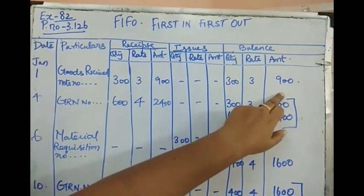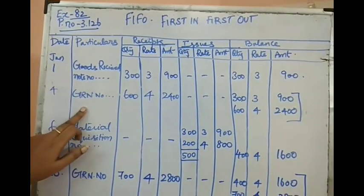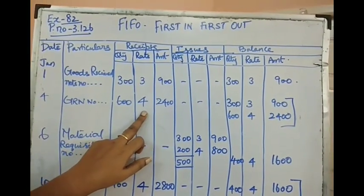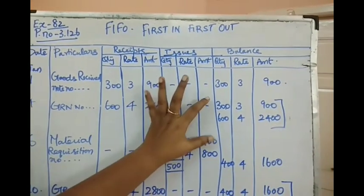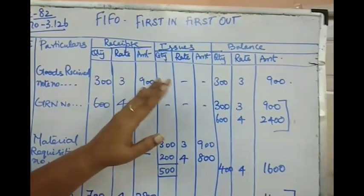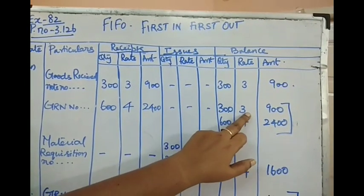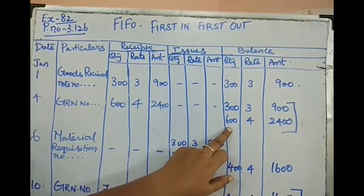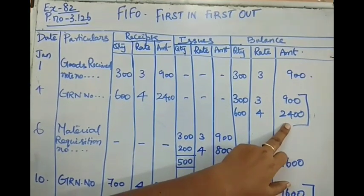On January 4th, there is another purchase — another Goods Received Note. That amounts to 600 units at ₹4 per unit, giving a value of ₹2400. I am keeping these transactions separately without mingling them. The previous transaction: 300 units at ₹3 per unit, ₹900. The new transaction: 600 units at ₹4 per unit, ₹2400 — recorded separately.